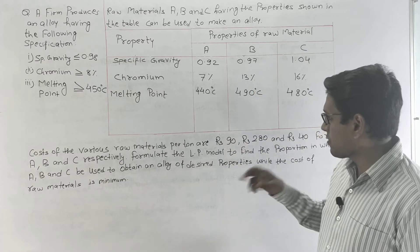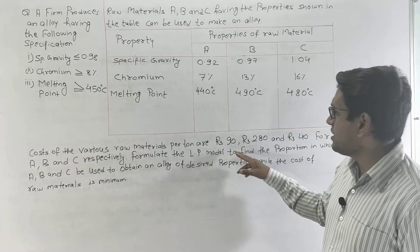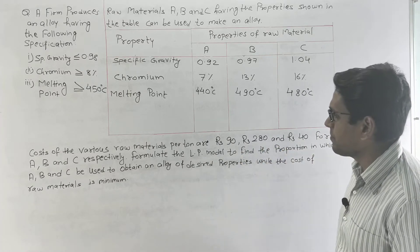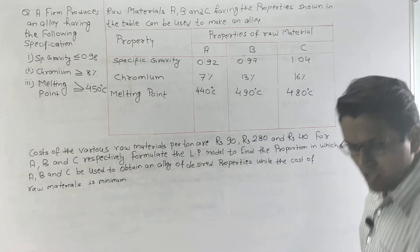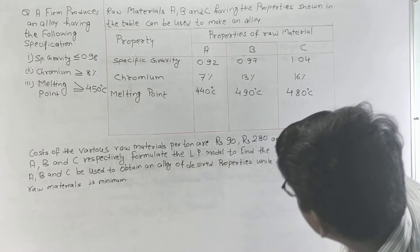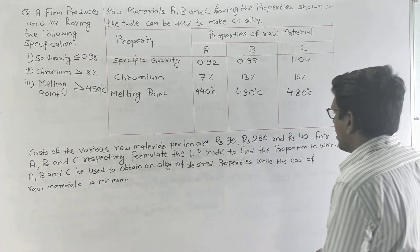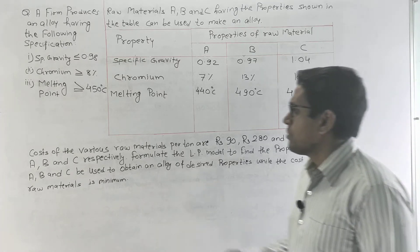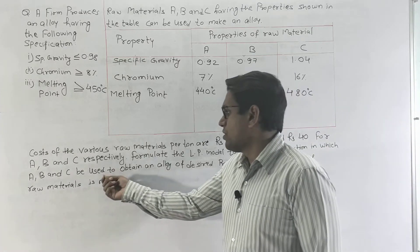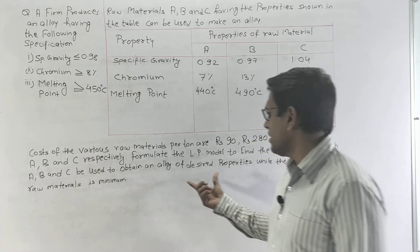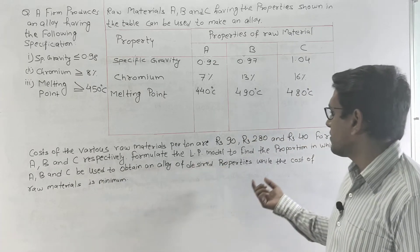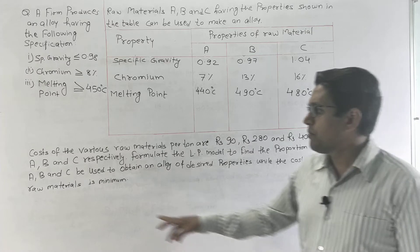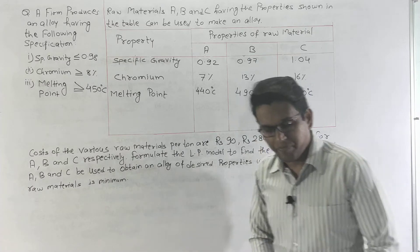The cost of the various raw materials per ton is: A costs rupees 90, B is rupees 180, and C is rupees 40. The problem asks us to formulate the LP model to find out the proportion in which A, B, and C should be used to obtain an alloy of the desired properties while the cost of raw material is minimum.